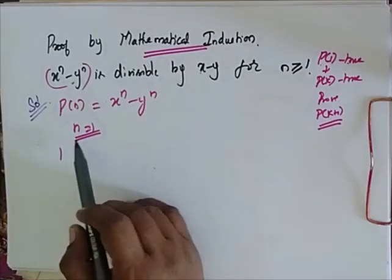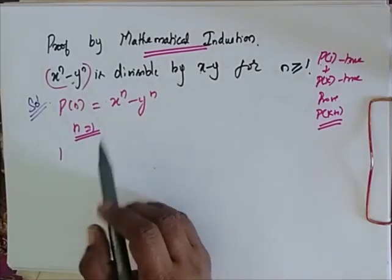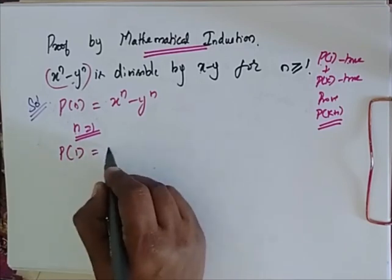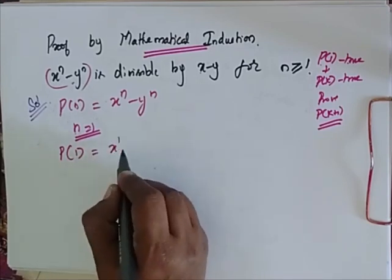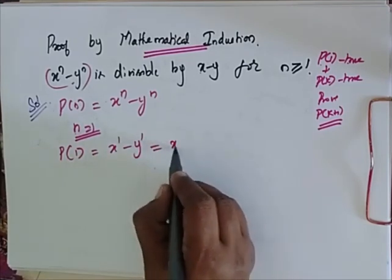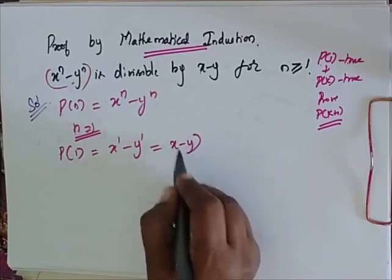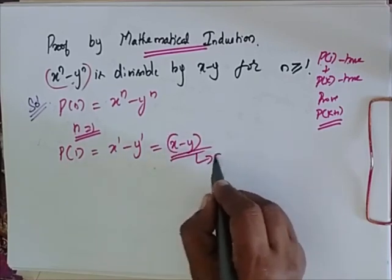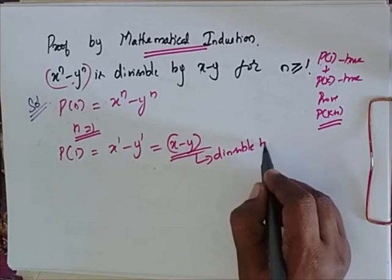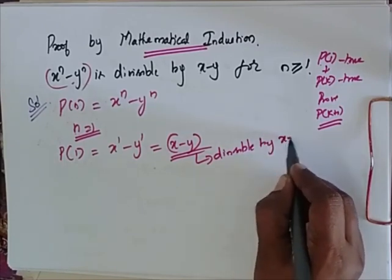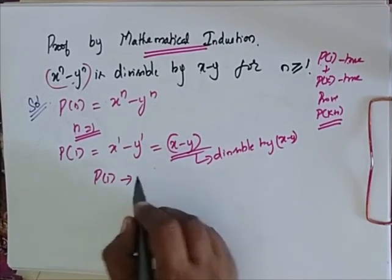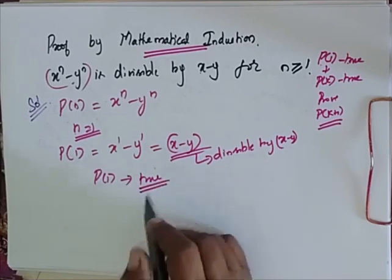Let me have my n as 1. I will have my P of 1 as x power 1 minus y power 1, which is equal to x minus y. So surely it is divisible by x minus y. So my P of 1 is true for n is equal to 1.